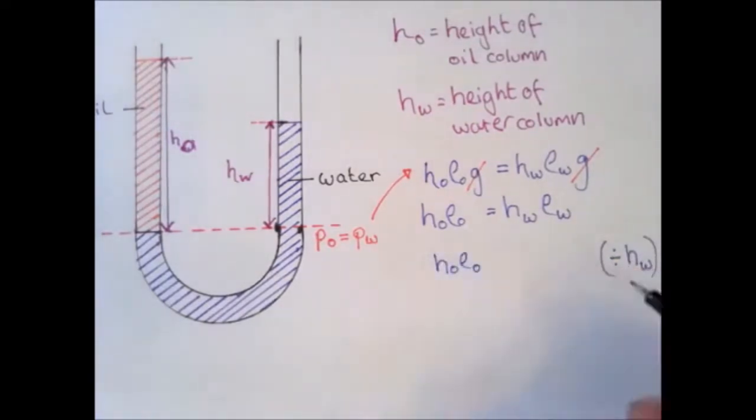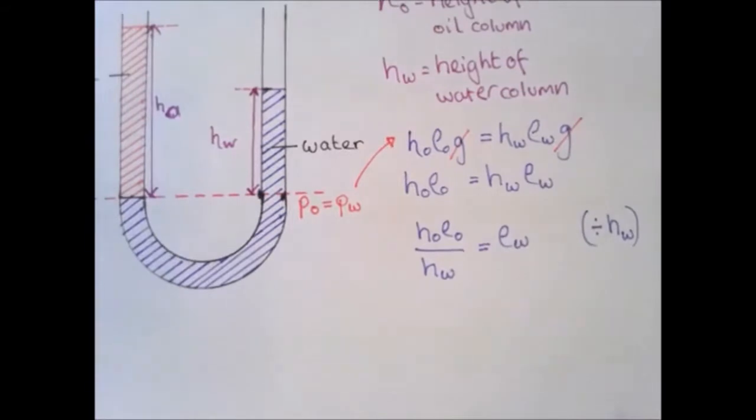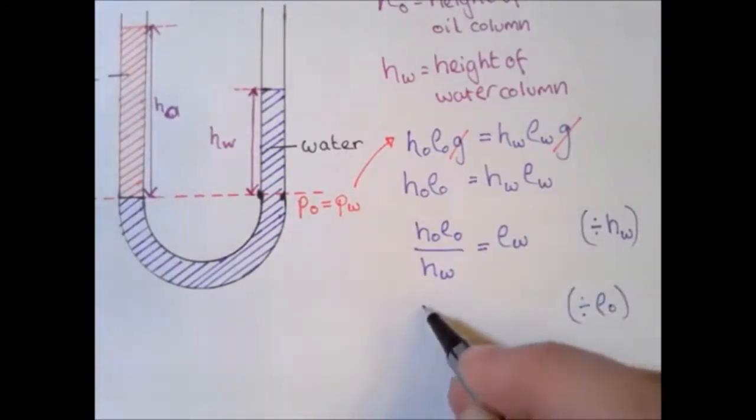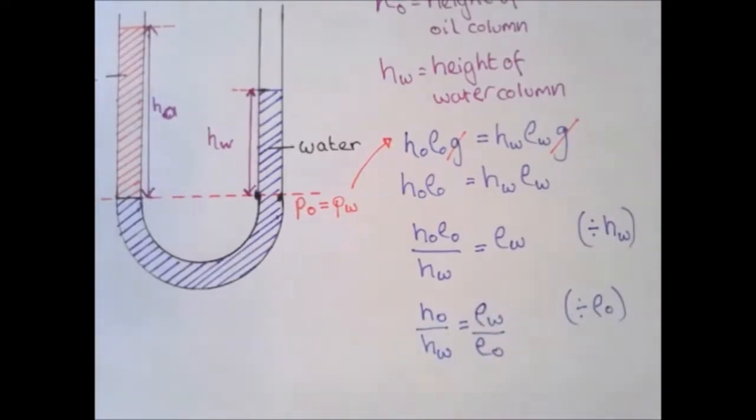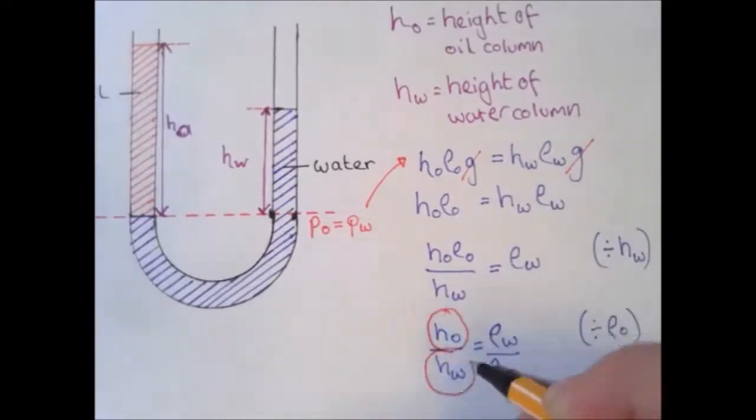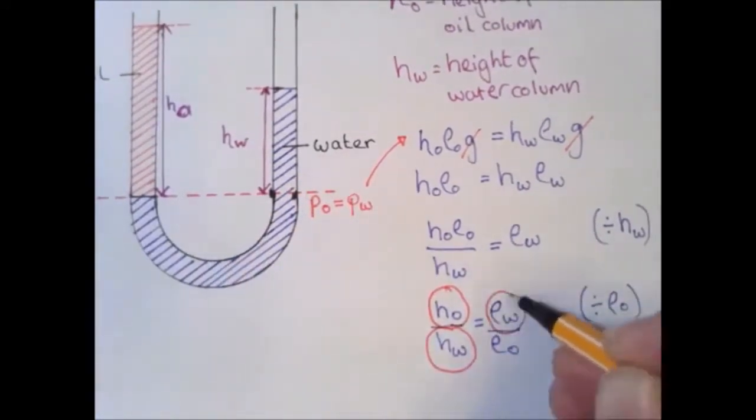To make the simplified version of the equation there. Dividing by HW gives us this version. And then moving it around again gives us a nice ratio: HO to HW is equal to Rho W over Rho O.